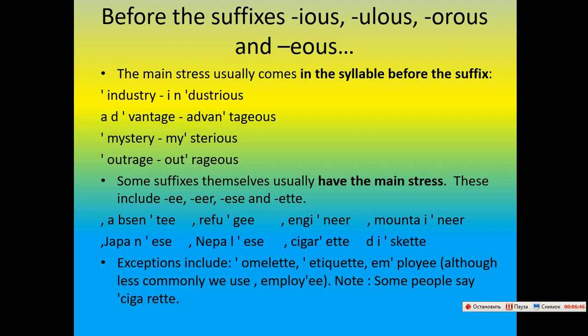Suffixes that usually carry main stress include: -ee, -eer, -ese, -ette. Examples: absentee, refugee, engineer, mountaineer, Japanese, Nepalese, cigarette. Exceptions include: omelette, employee. Note: some people say 'cigarette' with stress on the first syllable.